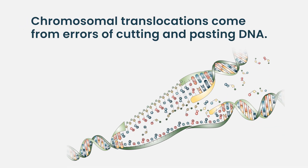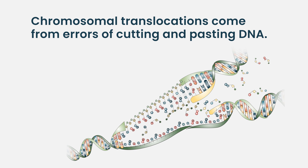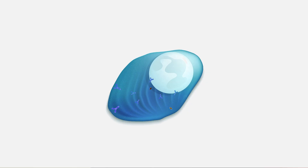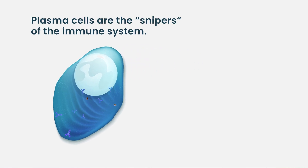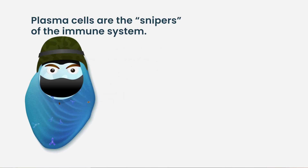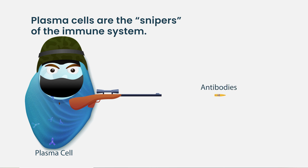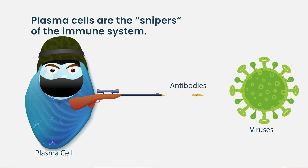The translocations we see in myeloma come from errors of cutting and pasting DNA that are an integral part of the development of plasma cells and B cells. Plasma cells are part of the immune system and have been likened to the snipers of the immune system. Their job is to produce the bullets of the immune system — antibodies — that are normally directed against invaders to the body, like viruses and bugs. They come out of a type of immune cell that we call B cells.